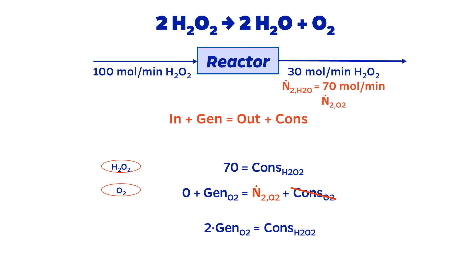From earlier, we have that 2 times the generation of O2 equals the consumption of H2O2. Plugging in the numbers, the outlet flow rate of O2 is equal to 35 moles per minute.